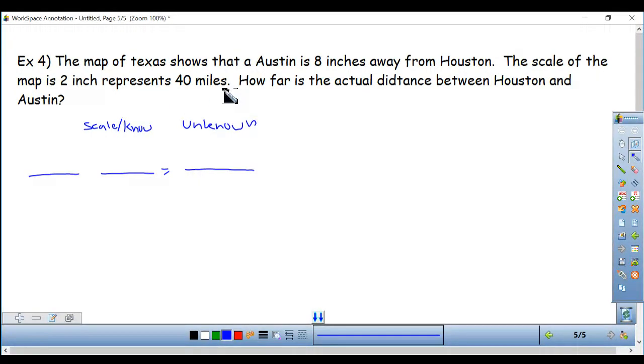The map of Texas shows that Austin is eight inches away from Houston. The scale of the map is two inches represents 40 miles. How far is the actual distance between Houston and Austin? Wow, there are so many typos in this one. Distance is spelled wrong. Texas should be capitalized. It should say inches. Sorry for that. But anyways, doesn't change how we solve the problem. It says the scale of the map is two inches represents 40 miles. So we've got two over 40. Two what? Inches. 40 what? Miles. Inches with inches. Miles with miles. And it says that Austin is eight inches away from Houston is my other number. Austin is eight inches away from Houston. How far is that in actual miles?